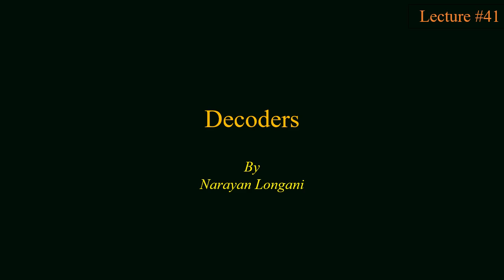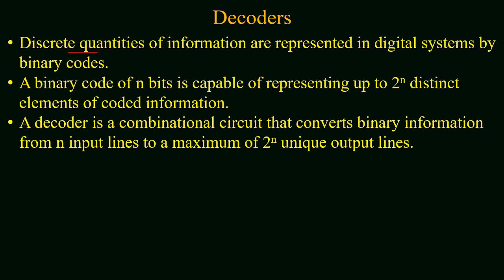Hello everyone and welcome back to the series of digital logic design. Today we will study about decoders. Discrete quantities of information are represented in digital systems by binary code. These codes can be used to represent various information, and a binary code of n bits is capable of representing 2^n distinct elements of coded information. A decoder is a combinational circuit that converts binary information from input lines to a maximum of 2^n unique output lines. If we are implementing these binary codes on hardware, then we will use a decoder circuit.